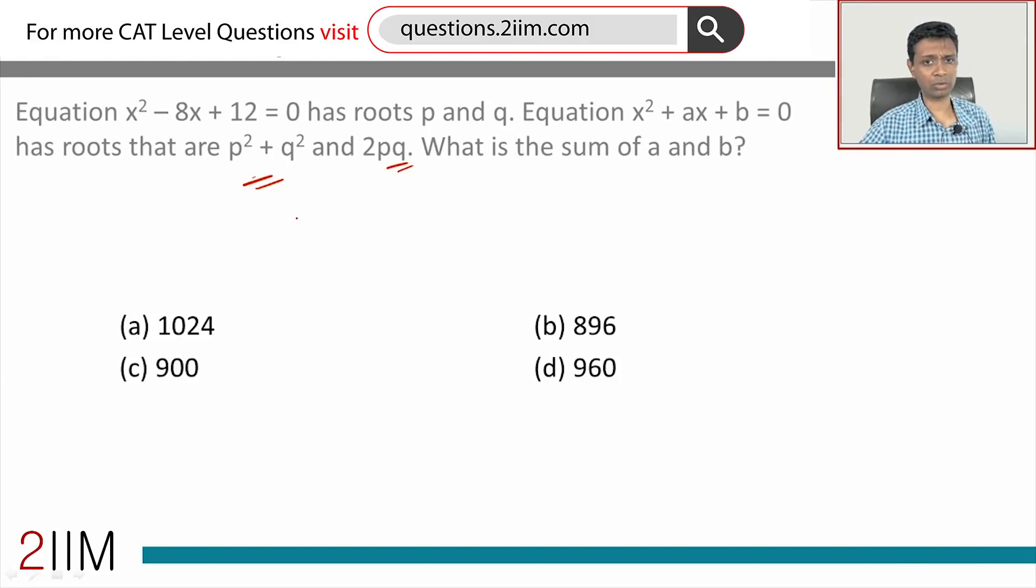This is based on the idea of sum of roots and product of roots. Here, sum of the roots p + q is -b/a which is 8. Product of the roots pq is 12.